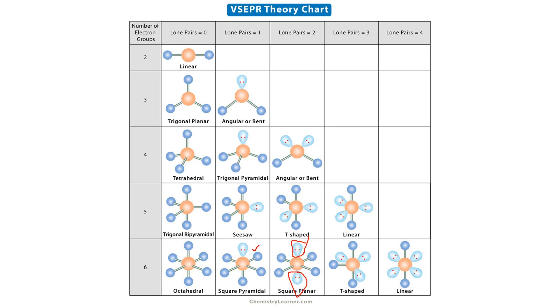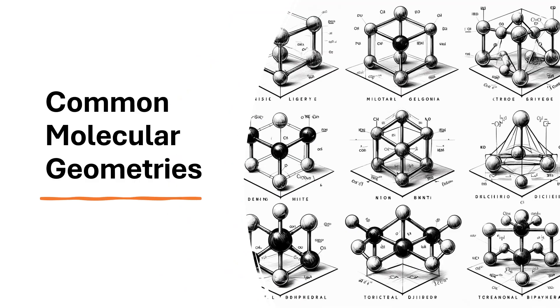So some molecular geometries are more common than others, which include our linear, trigonal planar, tetrahedral, trigonal bipyramidal, and octahedral. Each geometry is based on the number of electron pairs surrounding the central atom, influencing the molecule's overall shape. And also the electron pairs or the lone pairs.